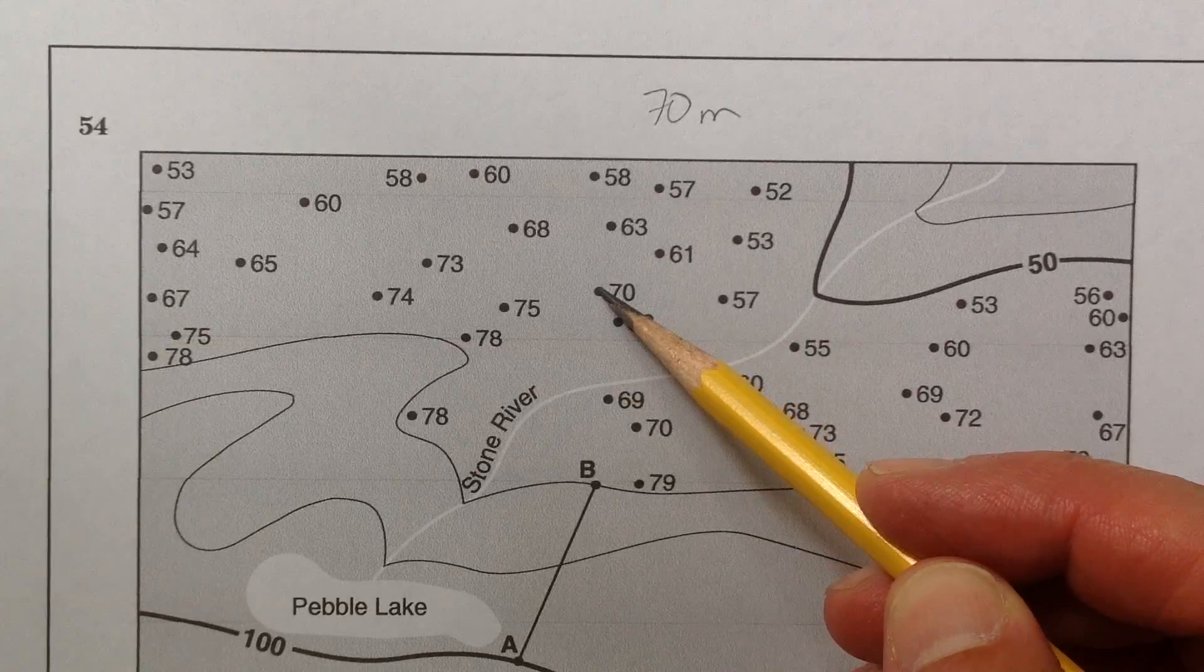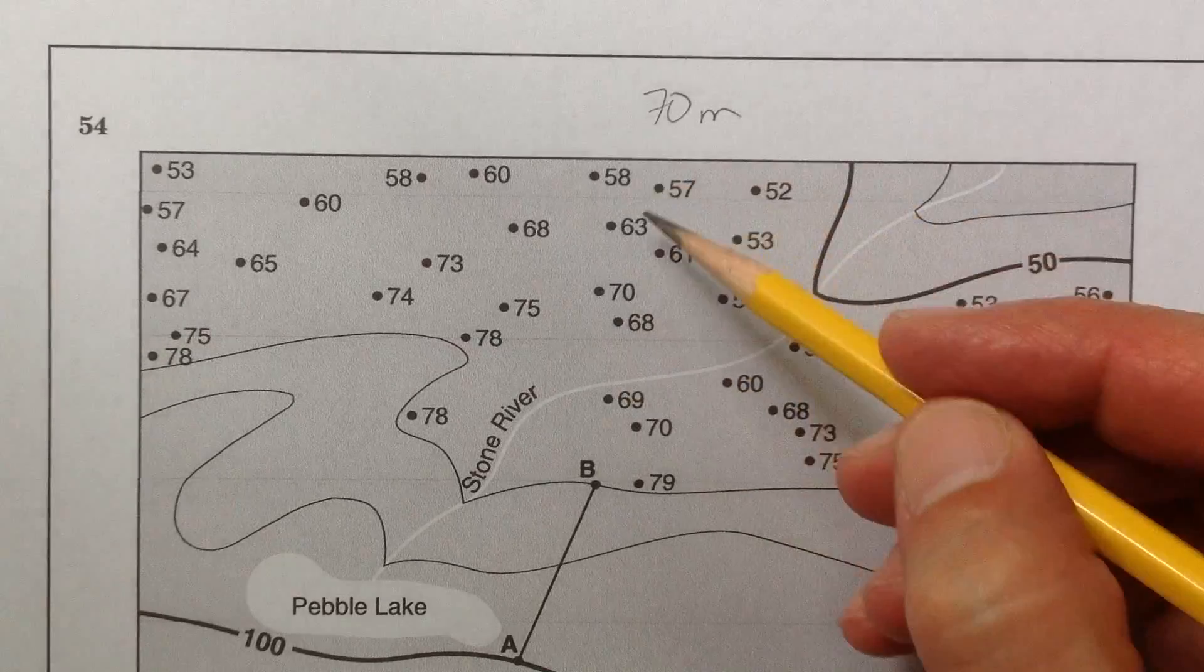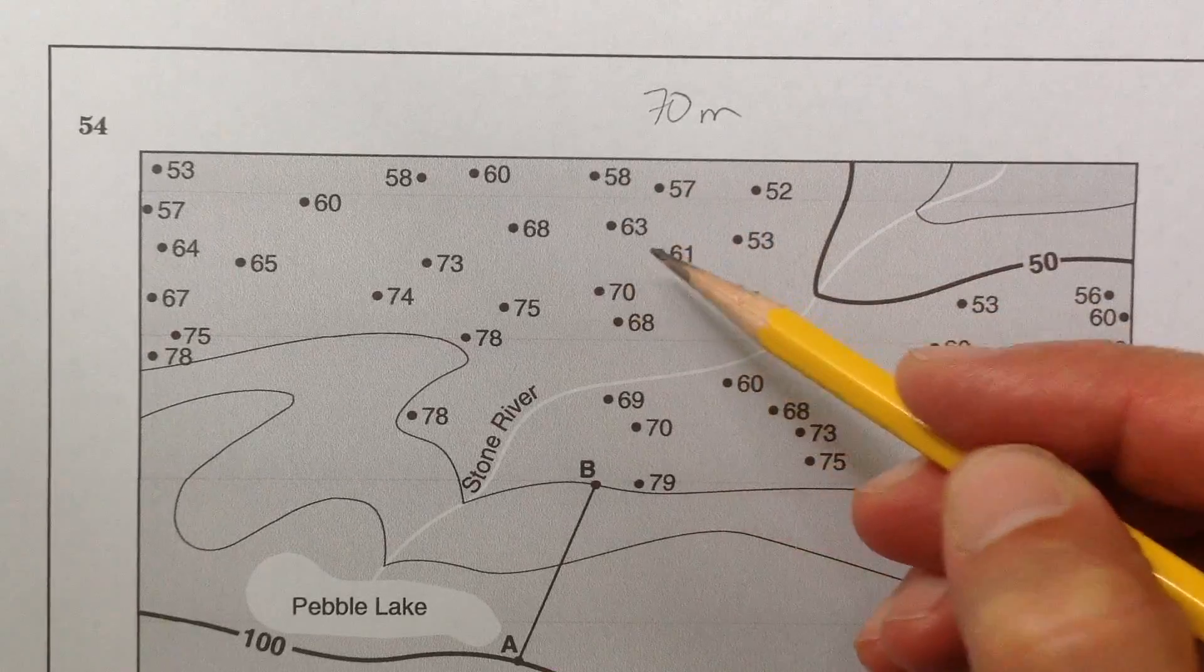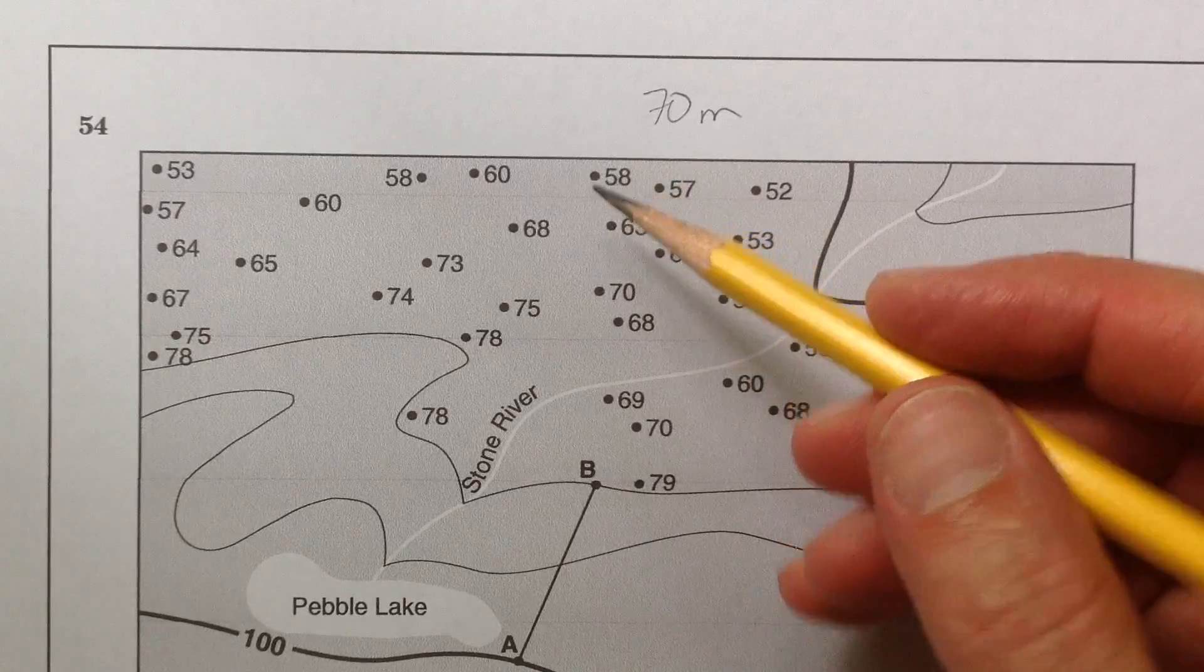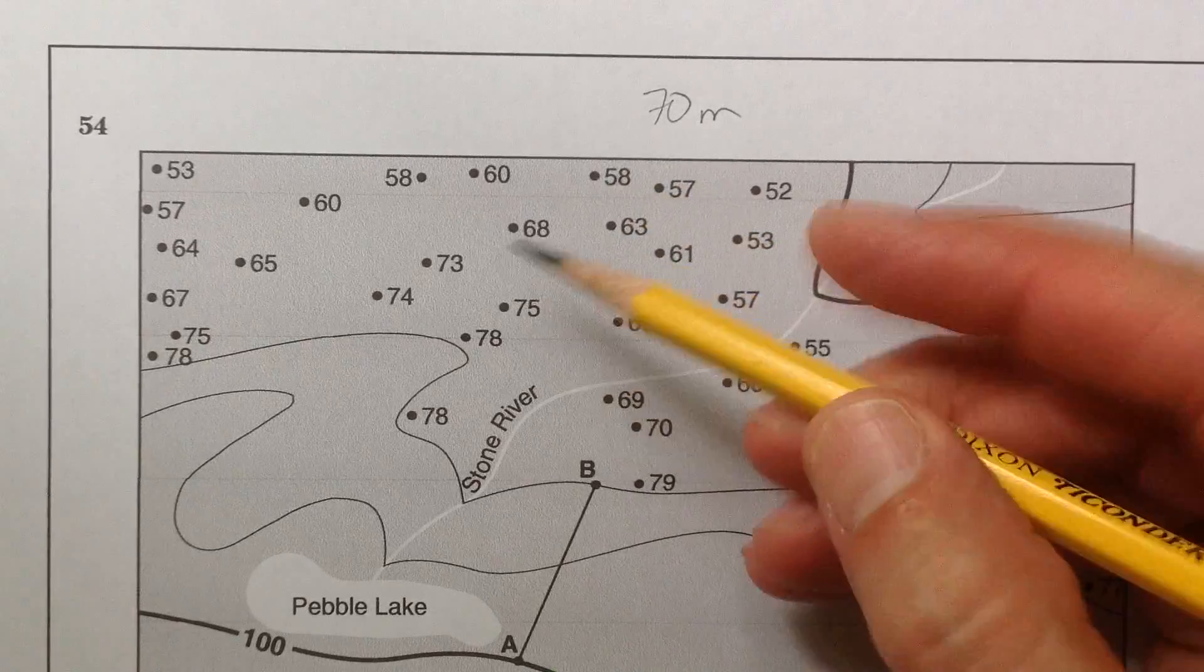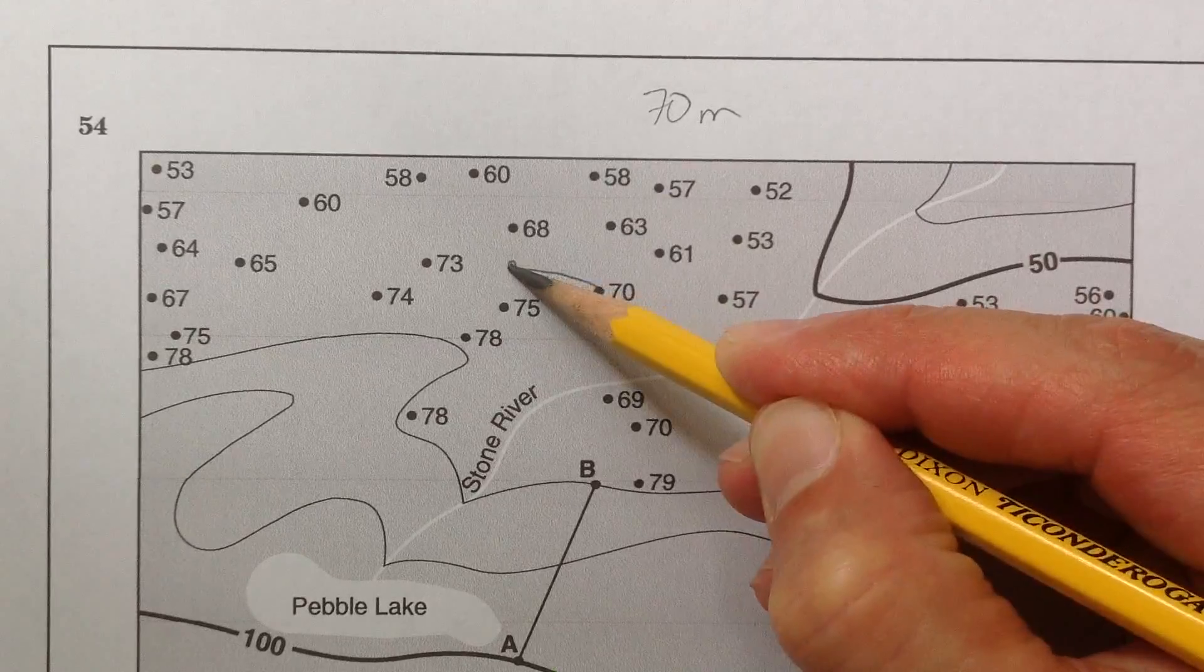So from here, where is the next 70? I'm going to look around. Is 70 between 68 and 63? No, that's too low. 63 and 61 is too low. Is 70 between 68 and 75? Yes, it is. I'll go there. Okay, so now I'm here.